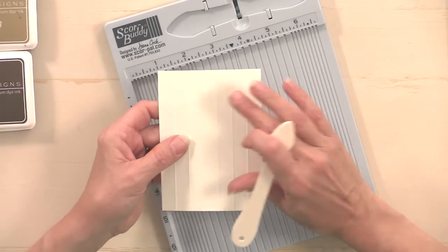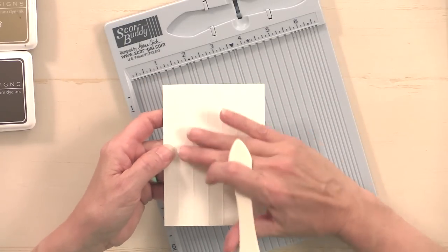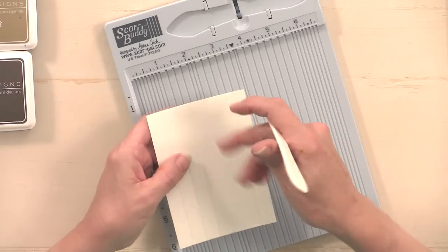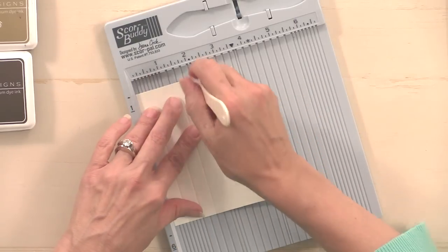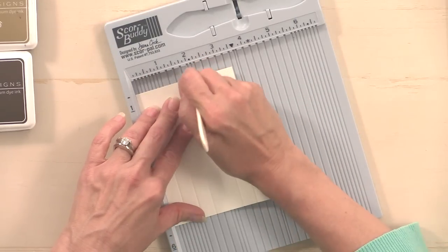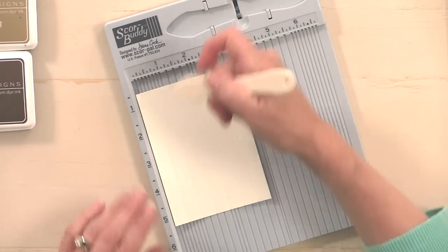Okay, so now we have these score lines. Now there are two sides. One side the score lines stick out and the other ones they are going inward like an impression. This is the side that we're going to use.